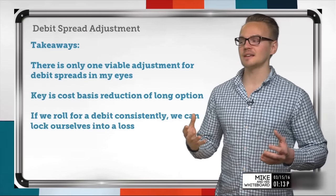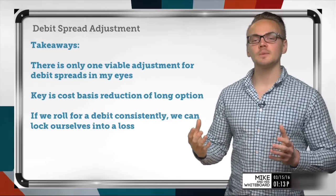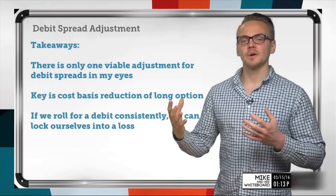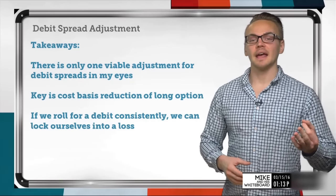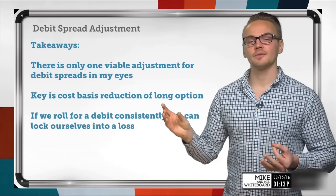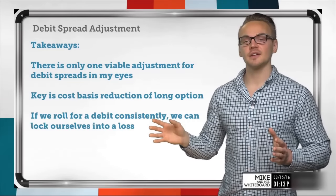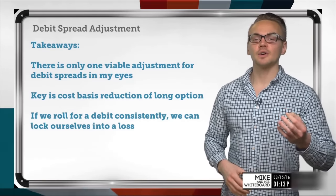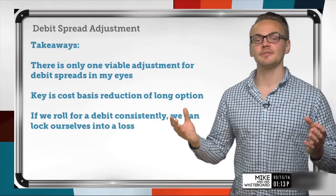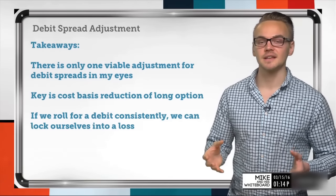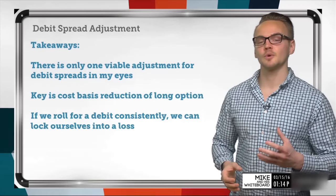The key is cost basis reduction of the long option — something that's often overlooked with debit spreads and vertical spreads. Really what we're doing is reducing our max loss. For example, if my 95 call was trading for $7.50 and I sold the short call for $2.60, that gives me a net debit of $4.90. If I hadn't spread it at all and just bought the long call, I could have lost $7.50 or $750 — almost double what I'd lose at the $4.60 adjusted debit. Reducing the cost basis of that long option is what drives our profitability.